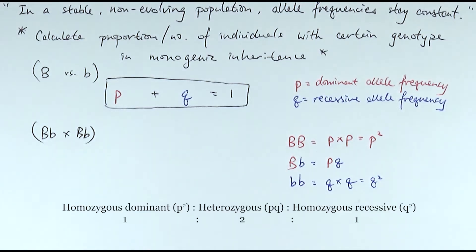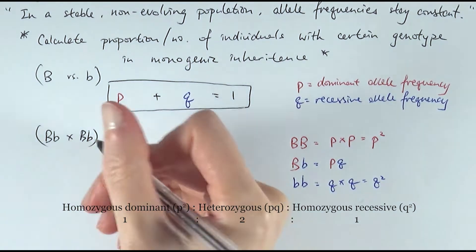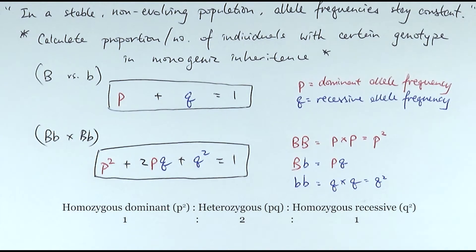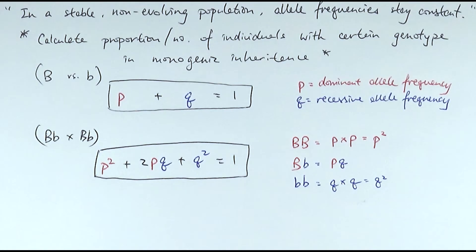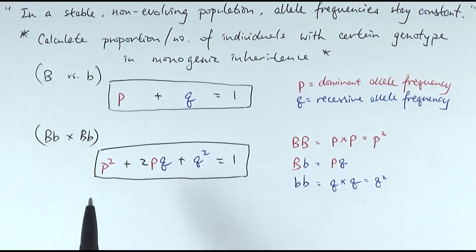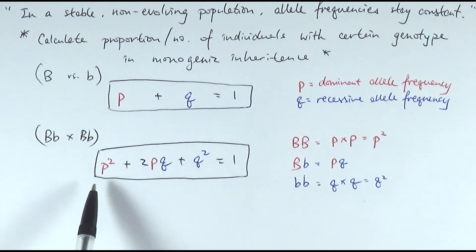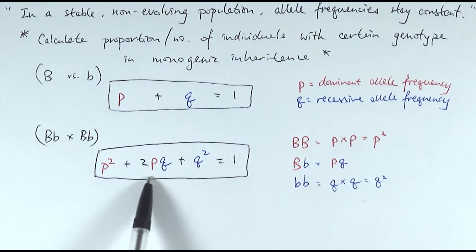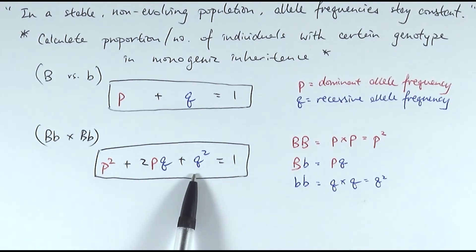If you do a quick Punnett square, you'll notice that 25% would be homozygous dominant, 25% homozygous recessive, and 50% heterozygous. That's why we end up with the quadratic equation: P squared plus 2PQ plus Q squared equals 1. The 1 stands for 100% of all individuals — everyone is either homozygous dominant, heterozygous, or homozygous recessive. All of those people added together make up the entire population.